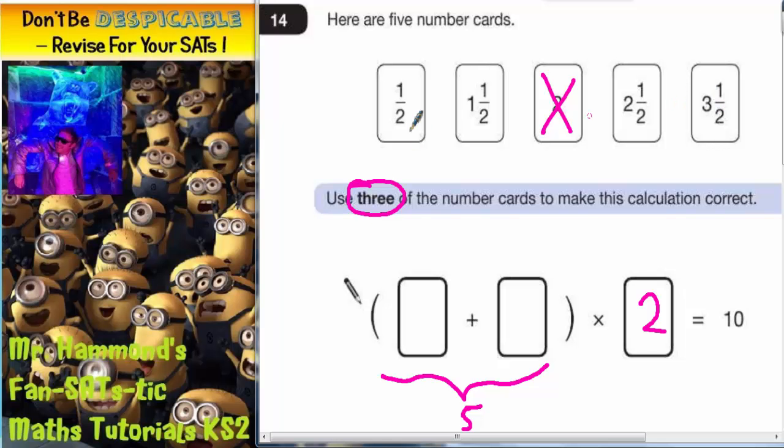Well half looks like it's going to be too small because to make five we need four and a half and four and a half is not there. So it can't be that one. And we've only got three left so which two of them make five? Just have a little check.